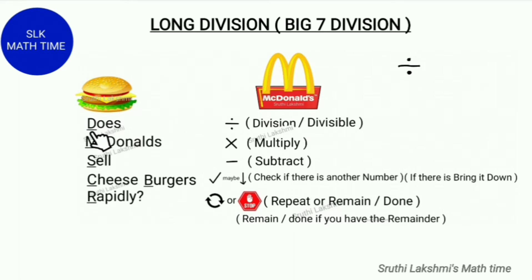D is for divide, M is for multiply, S is for subtract, C is to check if there's another number, B is to bring it down if there is another number, and R is for repeat or remainder. When you have the remainder, you are done.